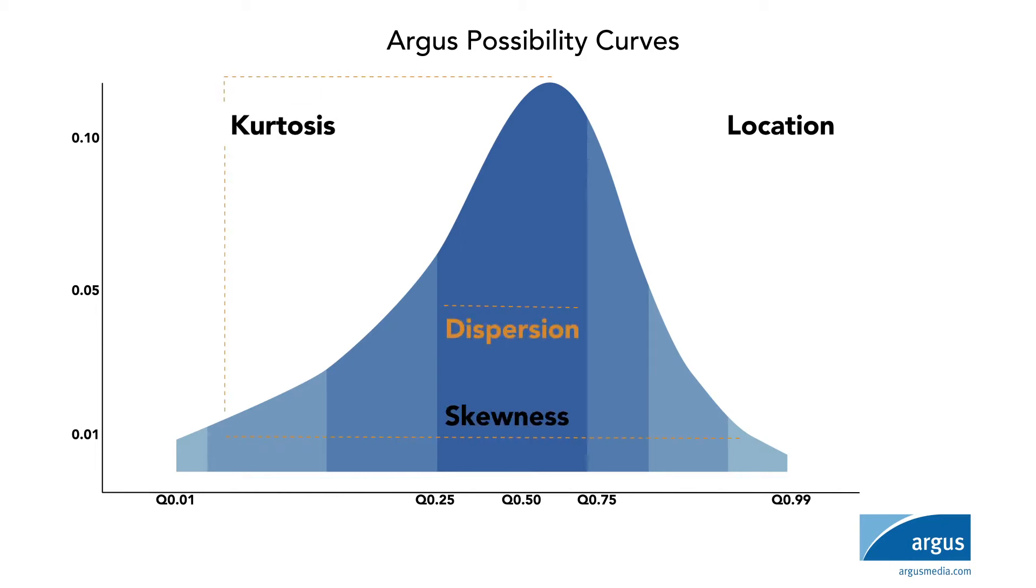While the dispersion parameter indicates the variance around the center of distribution, the skewness dictates the asymmetry, the upside risk or downside risk. The curve's tailness, or how thick the tails are, is defined using the kurtosis parameter. The combination of the kurtosis and skewness parameters yields the curve's balance of risk.